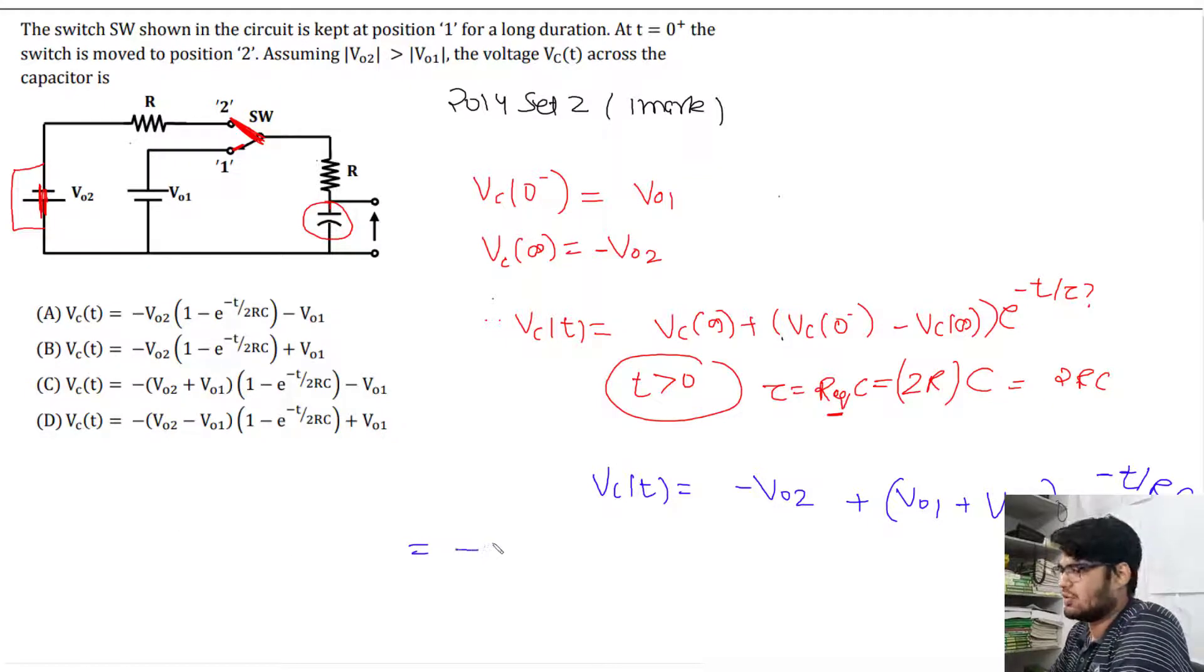This becomes minus V02 times (1 minus e to the power minus t by 2RC) plus V01 times e to the power minus t by 2RC.